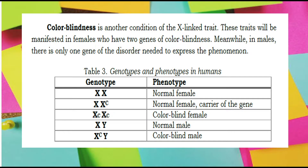Colorblindness is another condition of the X-linked trait. These traits will be manifested in females who have two genes of colorblindness. Meanwhile, in males, there is only one gene of the disorder needed to express the condition. XX means normal female, while XX with the affected allele means normal female but a carrier of the gene.